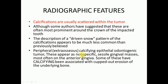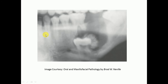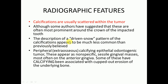The calcifications are usually scattered within the tumor and may be present within the radiolucent area. Some authors have suggested these are most often prominent around the crown of the impacted tooth, as shown here — you can see the calcifying area most common with the impacted tooth. The description of a 'driven snow' pattern of calcification appears to be much less common than previously believed.